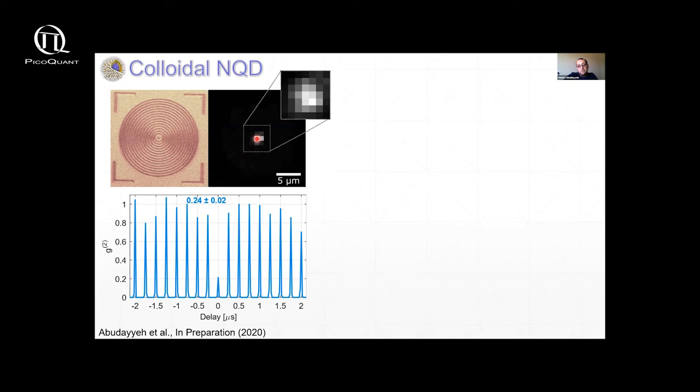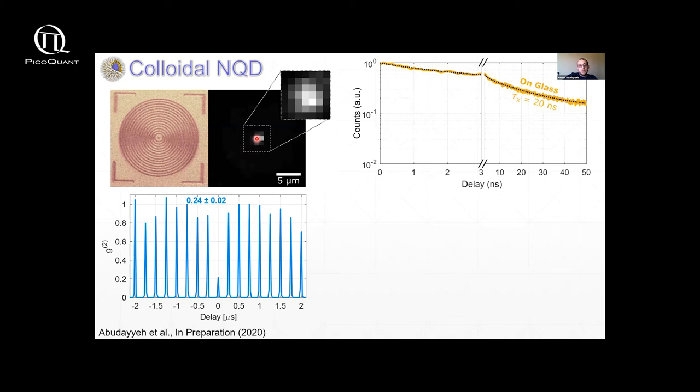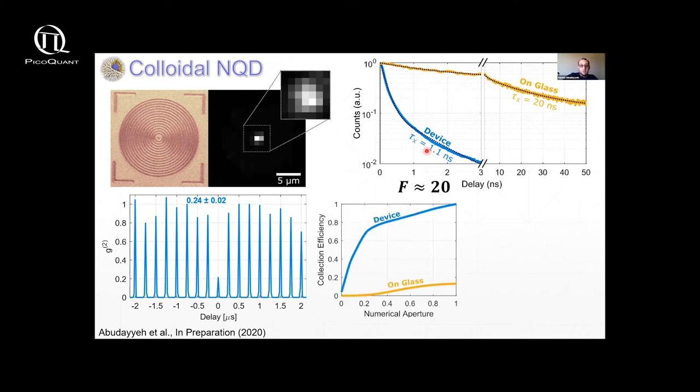Again, we do G2 measurements to confirm that it's a single quantum dot. And now we need to show that the lifetime is reduced and the collection efficiency is maintained. So to do that, first we measure the quantum dots on glass. We measure a lifetime of about 20 nanoseconds on glass. And then compare this to a measurement on our device where we measure a lifetime of about one nanosecond. So this tells us that we successfully induced the Purcell factor of about 20, which is very nice.